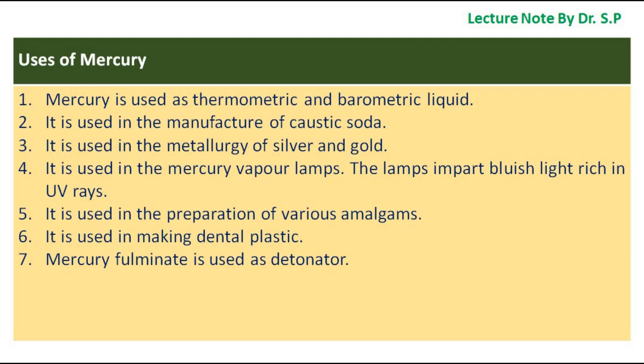Mercury vapor lamps impart bluish light rich in UV rays. Mercury is used in the preparation of various amalgams and in making dental plastic. Mercury fulminate is used as a detonator.